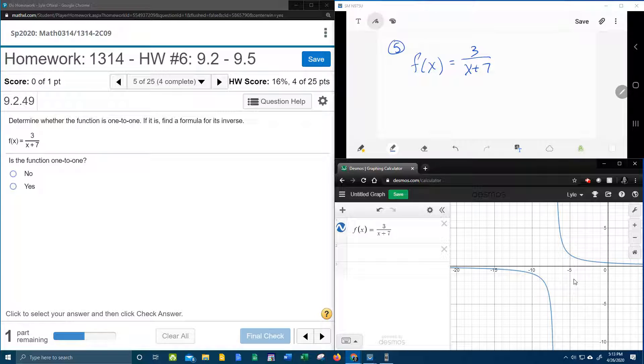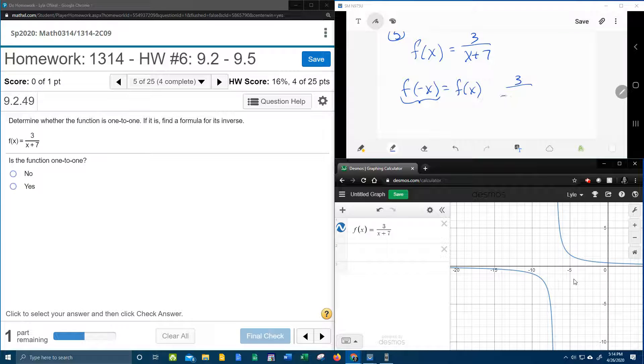There is another way to check algebraically, and that is to check and see, does f of negative x equal f of x. So if you don't have access to Desmos, you can check this algebraically. To evaluate f of negative x, take your function and replace x with negative x. And then the original function, 3 over x plus 7, we want to know do these equal, are these the same thing?